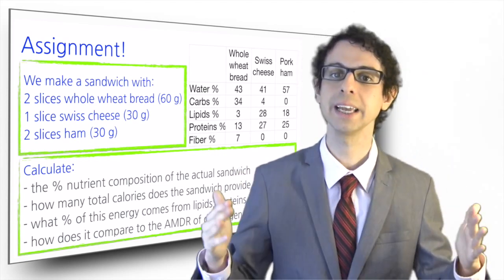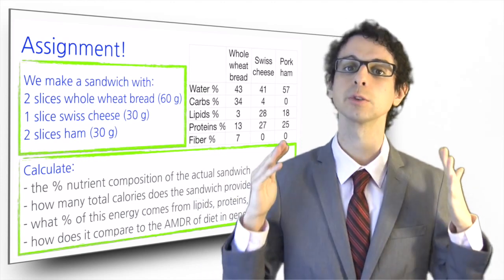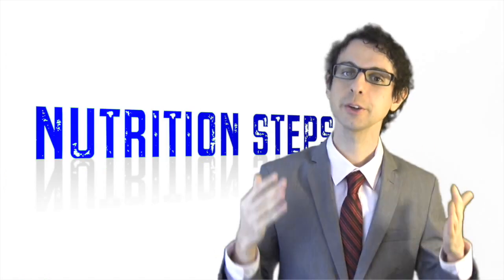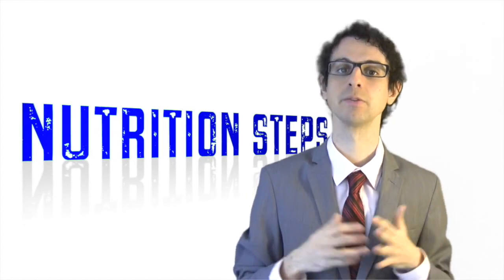If I have done a good job explaining over the last couple of videos, you should now be able to calculate these four things: One, the percent nutrient composition of your actual sandwich — meaning what percent is made of lipids, proteins, carbs, water, and fiber. Two, how many total calories does your sandwich provide? Three, what percent of this energy comes from lipids, proteins, and carbohydrates? And four, how does it compare to the ideal macronutrient distribution of the diet in general? After you have done your calculation, you can find the solution by following the link below.